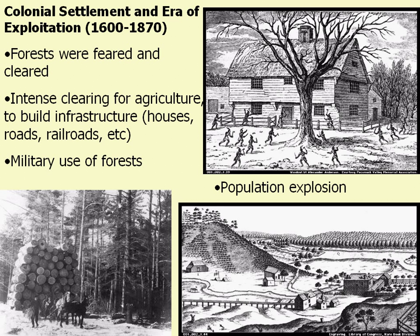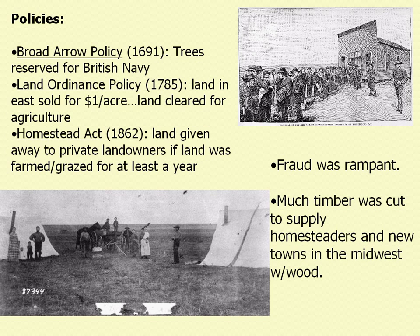The policies instigated by governments during this time period were reflective of this exploitative mentality of 'it'll never run out.' The Broad Arrow Policy of 1691 reserved trees specifically for use by the British Navy. The Land Ordinance Policy and the Homestead Act were put in place to make productive use of all this free land. Fraud was very rampant during this time period, and the timber barons and exploitative interests in the forest industry took advantage of the ready supply of timber needed to supply the Midwest.